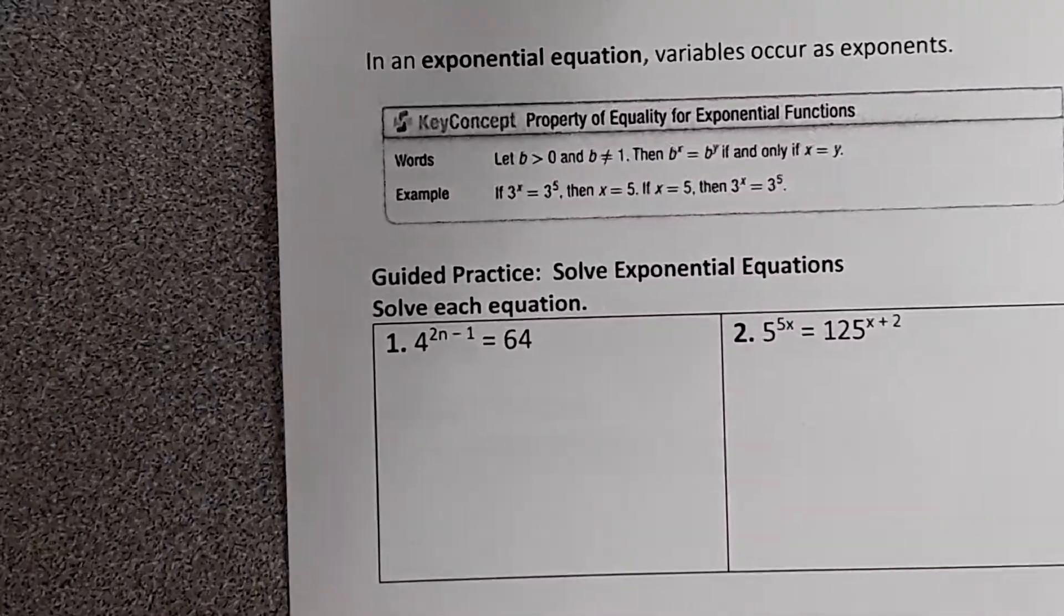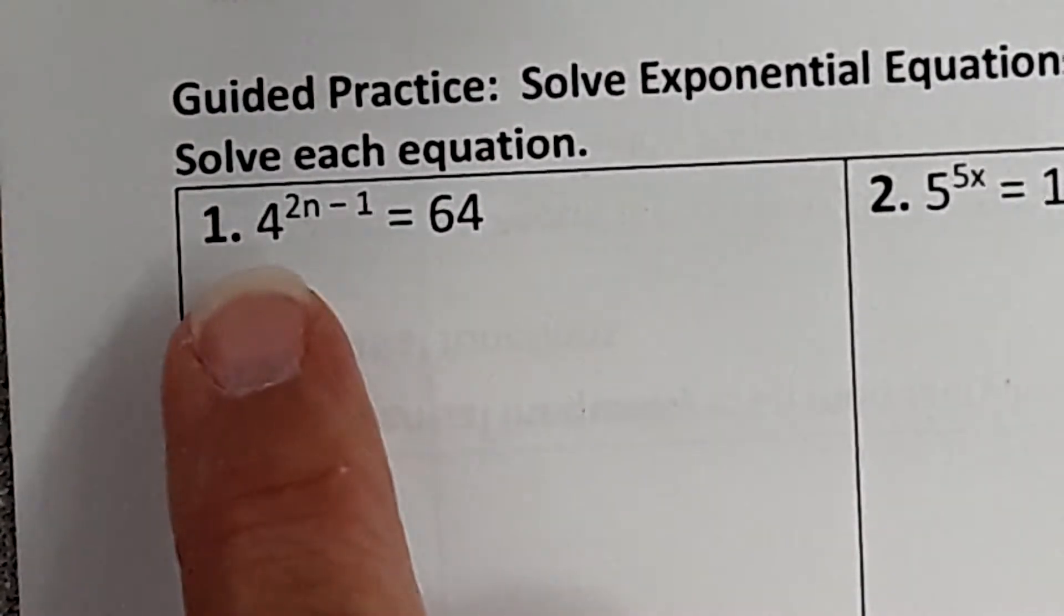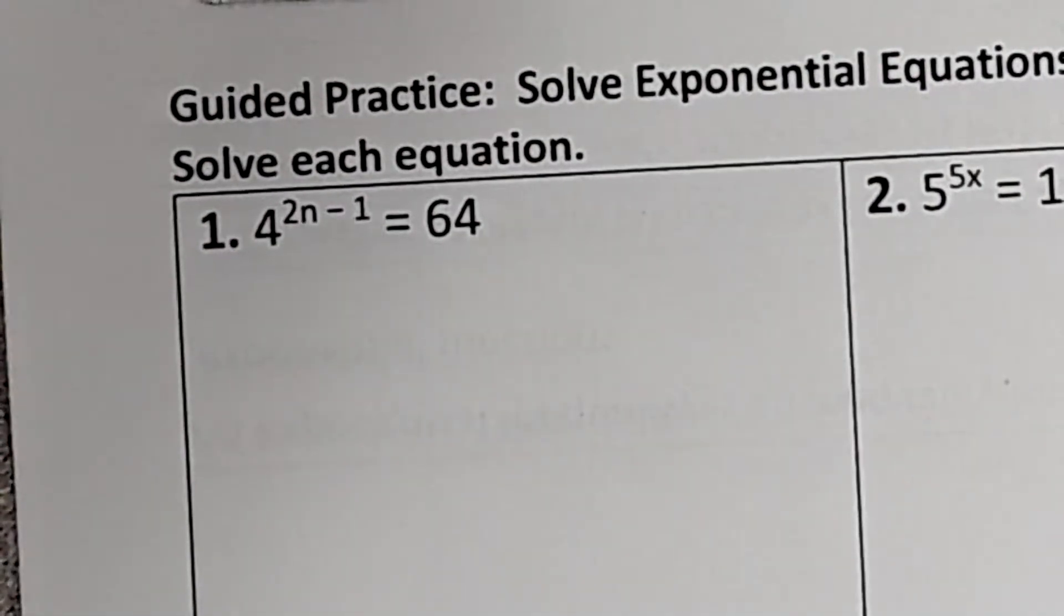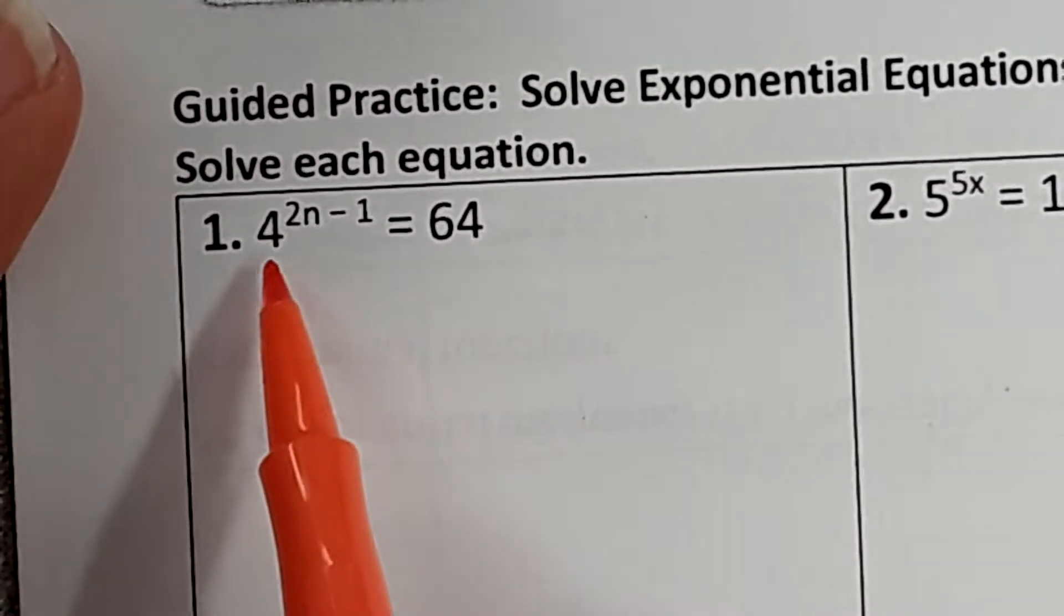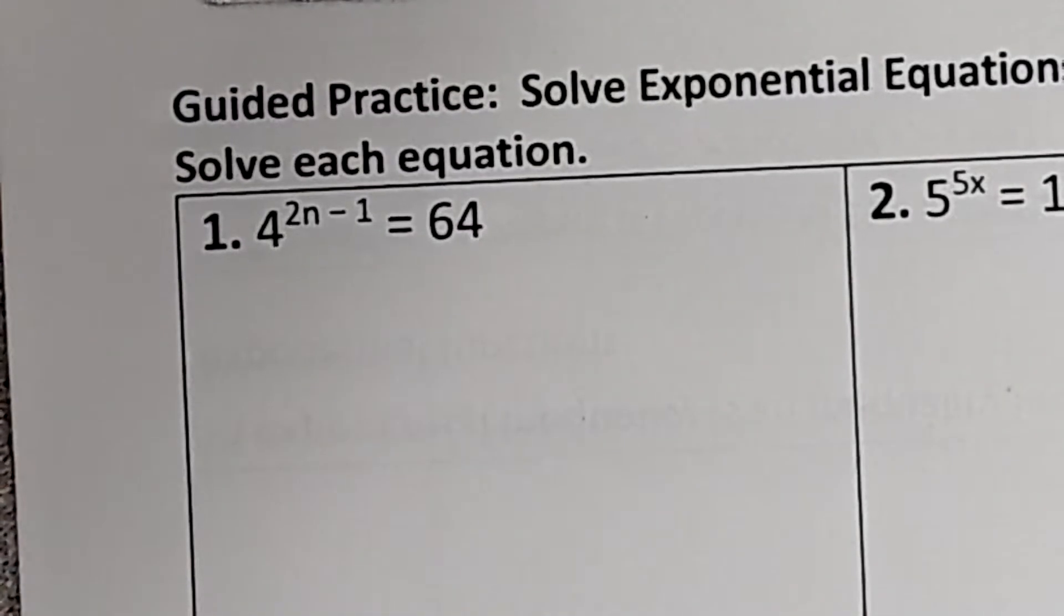We're going to look at this first example. We're going to notice that my base is 4 and 64. Well, I can't solve that unless I can make them the same. So we're going to do it a couple different ways. But the first one is we're going to look at 4 and 64. Is there a way to rewrite 64 with a base of 4? 4 to the third power, or 4 cubed.